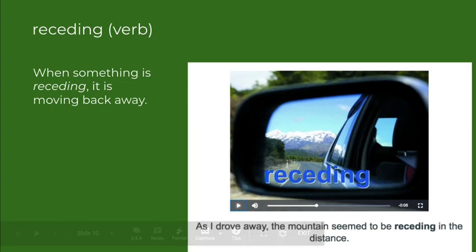Our next word is receding, and it is a verb — an action word. When something is receding, it is moving back away. If you look at the picture, the mountains are receding. The sentence is: as I drove away, the mountains seemed to be receding in the distance. So it means to go back.